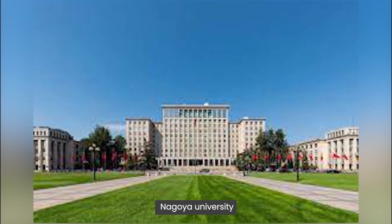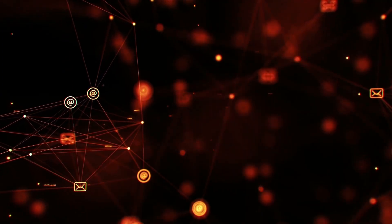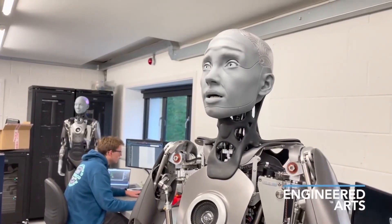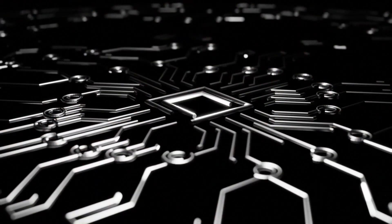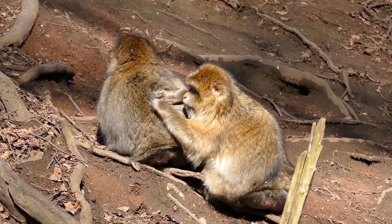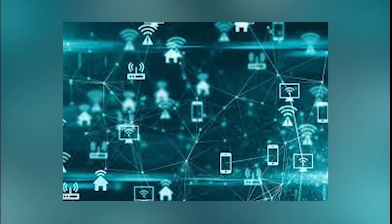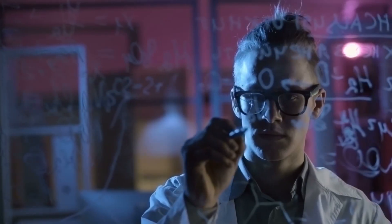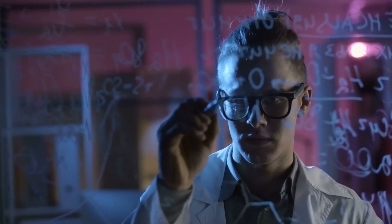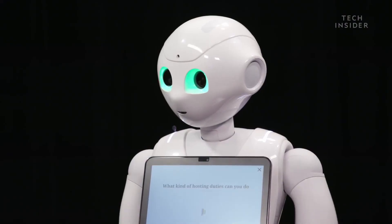Previous studies have shown that monkeys can perform this task quite well. The Nagoya University team created an artificial neural network model that performed the delayed matching to sample task and analyzed how it behaved. Despite starting from random neural networks without even a memory function, the model evolved to perform similarly to monkeys in previous studies. The neural network could examine its memories, keep them, and separate outputs — doing so without any assistance or intervention by the researchers, suggesting plausibility of it having metamemory mechanisms.